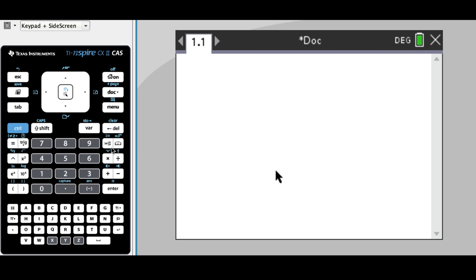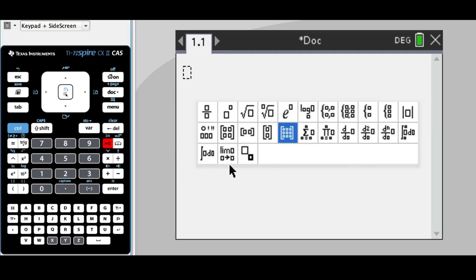First, we're going to go over on the keypad next to the number 9 button and press that button. We have a couple of options for matrices: a 2x2 matrix, a 1x2 or 2x1 matrix that we can enter straight away.